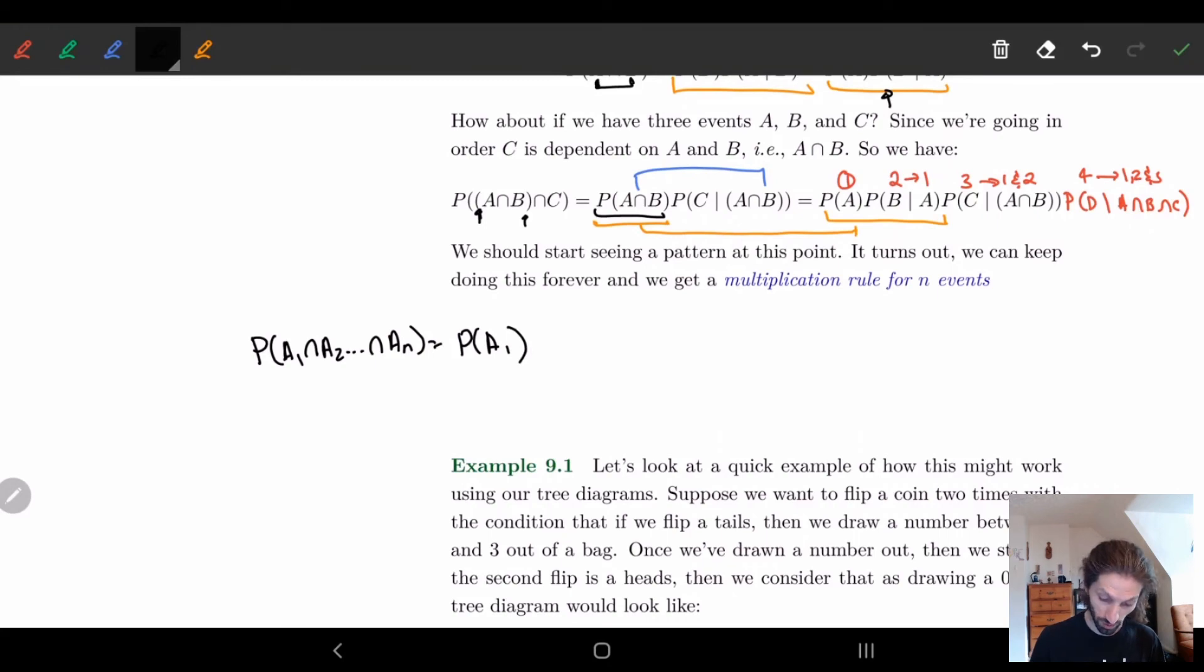So what we have is the probability of A1 times A2 all the way up to An. This is given by the probability of A1, so we start off with just A number one. Then we do number two given A1. Then we do number three given the first two, A1 and A2. And we keep doing this all the way until we get to An given by A1, A2, all the way to An minus one. Look at that, you can now have a number of events and you are good to go.